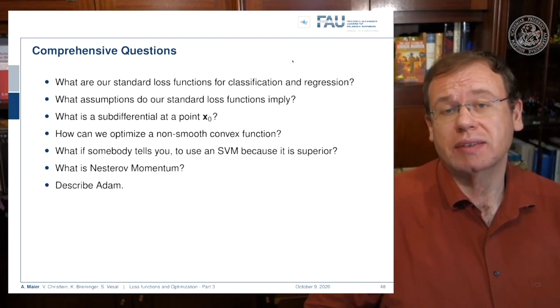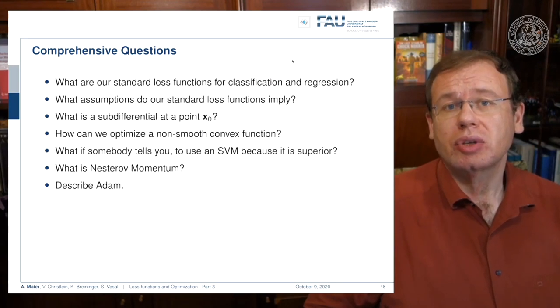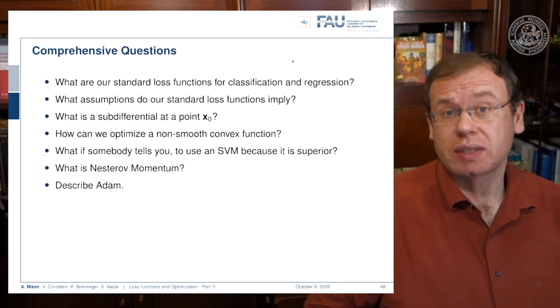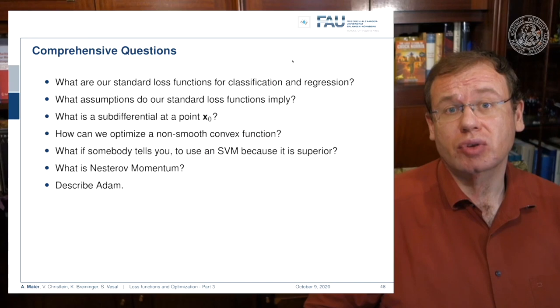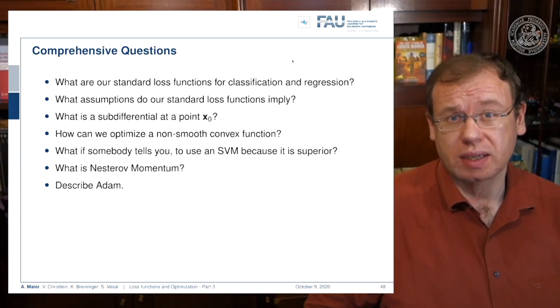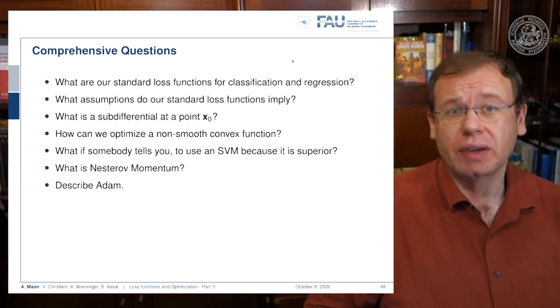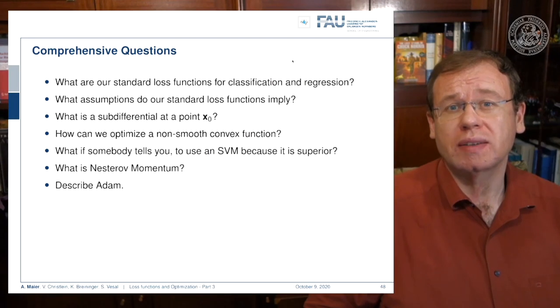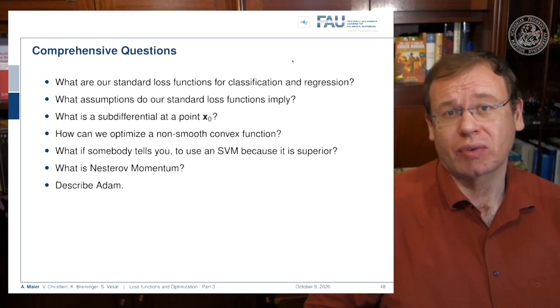Some comprehensive questions: what are our standard loss functions for classification and regression? Of course L2 for regression and cross entropy loss for classification. You should be able to derive those. This is really something you should know because the statistics and their relations to learning losses are really important. The statistical assumptions, probabilistic theory, and how to modify those to get our loss function are highly relevant for the exam.